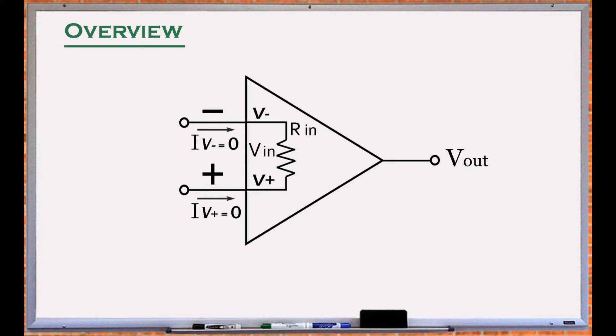An amplifier amplifies its input, the difference between its positive and negative terminals, by its open-loop gain G, and presents it at its output terminal.